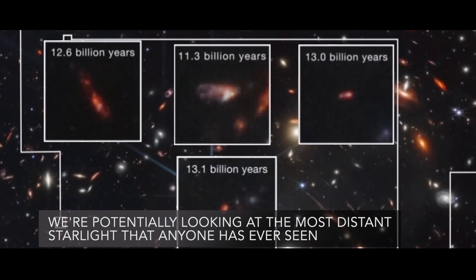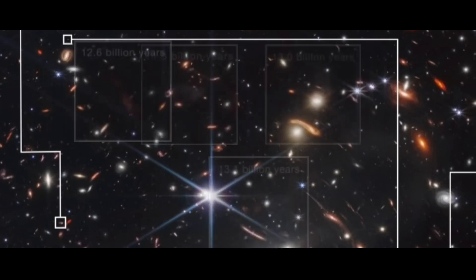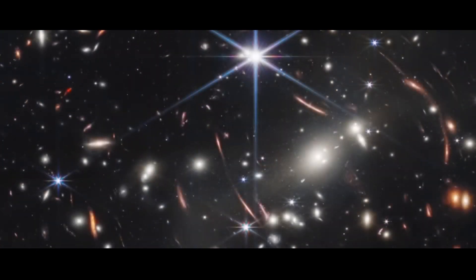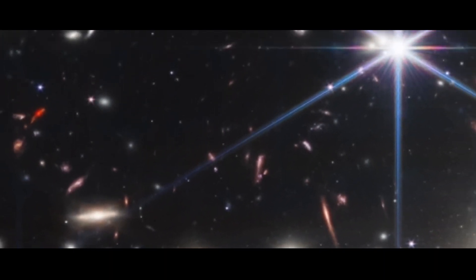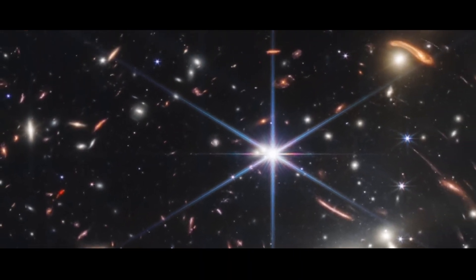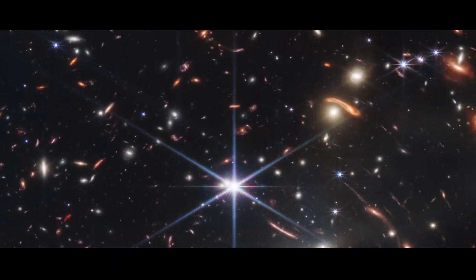We're potentially looking at the most distant starlight that anyone has ever seen, he said. The more distant objects are from us, the longer it takes their light to reach us. And so to gaze back into the distant universe is to see into the deep past. Though Glass Z13 existed in the earliest era of the universe, its exact age remains unknown, as it could have formed any time within the first 300 million years.